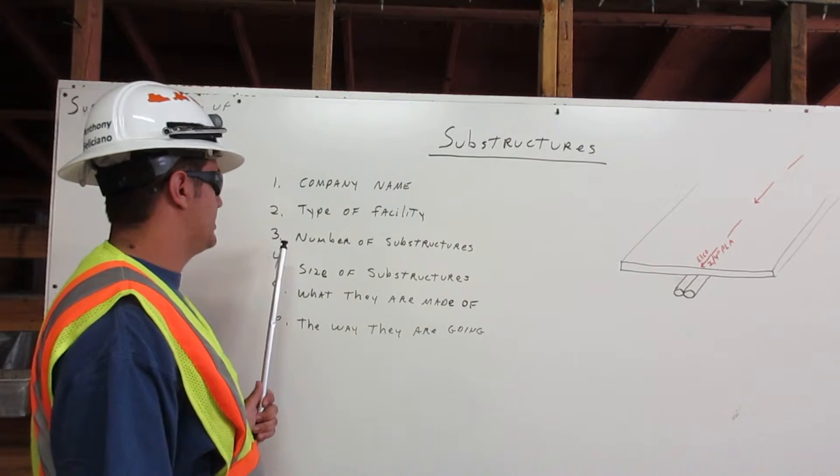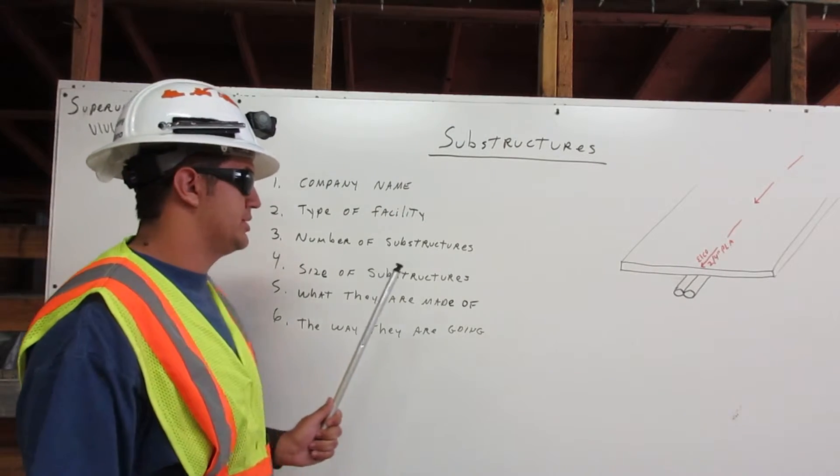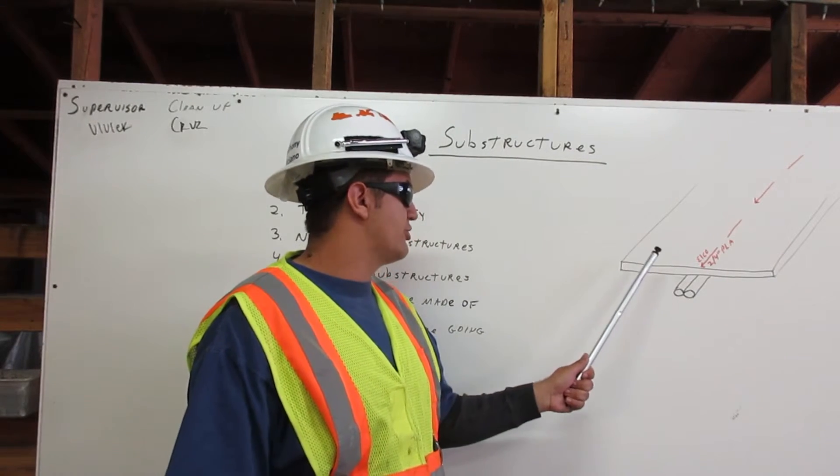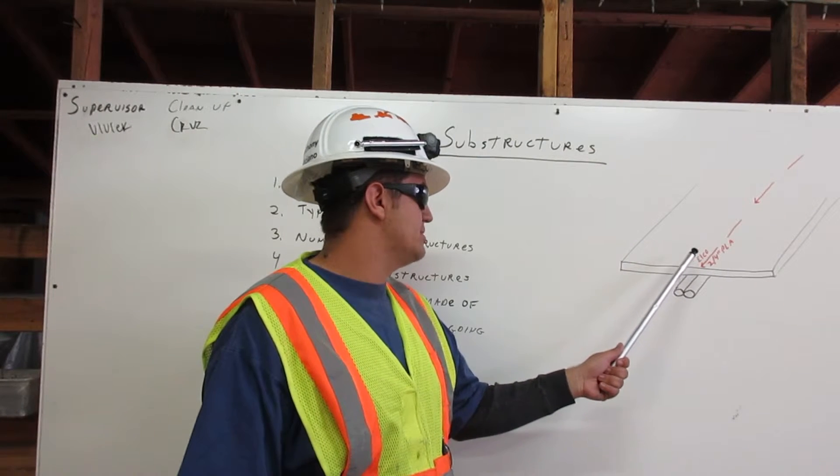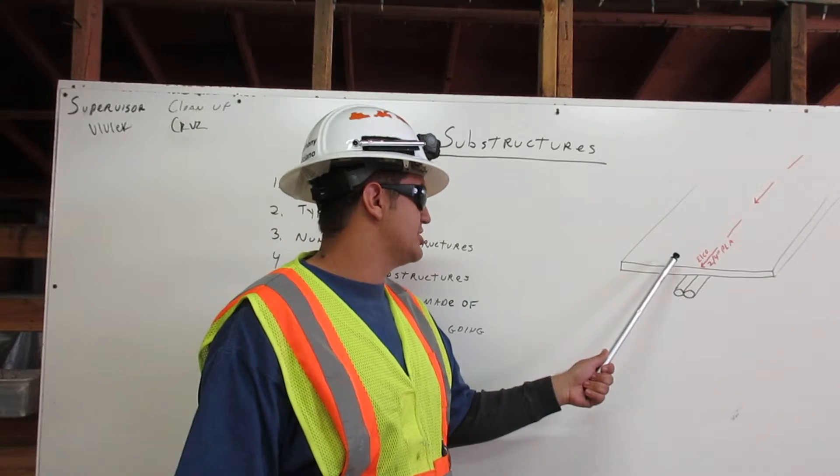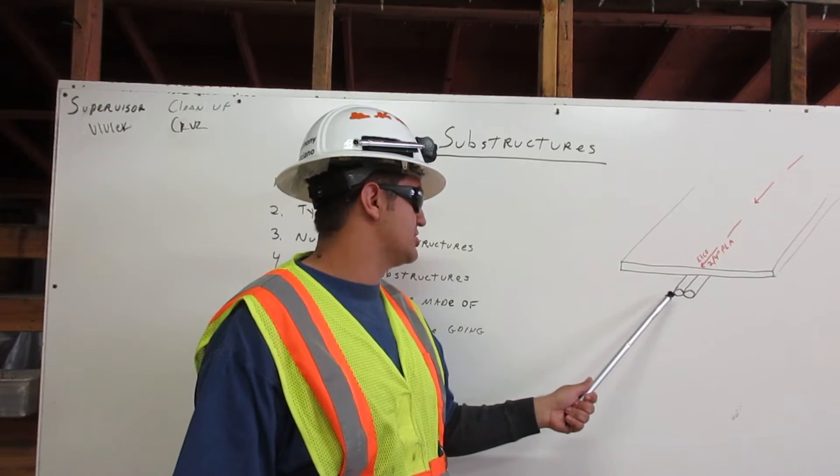Third, number of substructures. Below the name, there is more information, and here it is two slash four inch PLA. The number of substructure is the two, so there is two substructures here.